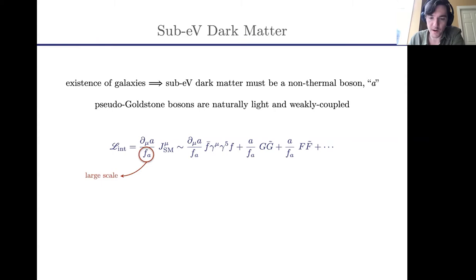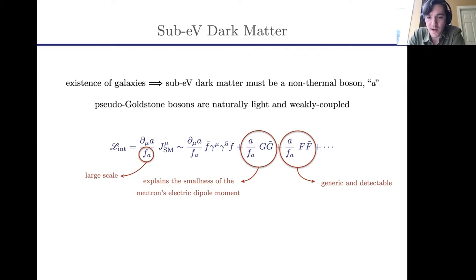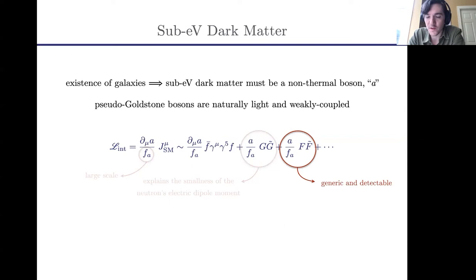One example shown here is how such a particle could couple to the gluon field strength — this is the defining coupling of what's called the QCD axion, which dynamically explains why the neutron's electric dipole moment is small. However, for most of today's discussion I'll focus on the coupling to the electromagnetic field strength — FF-dual — for a couple of reasons. This coupling is quite generic, often having contributions directly from the UV theory, and even if not, the coupling to electromagnetism is radiatively generated at an appreciable level from QCD coupling alone. Furthermore, it's often the most detectable coupling in the game.